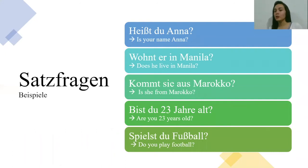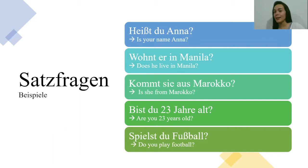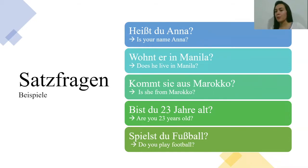In order to introduce you to this topic, I will give you some examples for the Satzfrage. First example: Heißt du Anna? — Is your name Anna? Wohnt er in Manila? — Does he live in Manila? Kommt sie aus Marokko? — Is she from Morocco? Bist du 23 Jahre alt? — Are you 23 years old? Spielst du Fußball? — Do you play football?